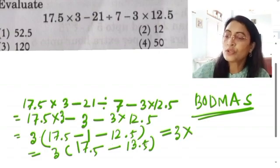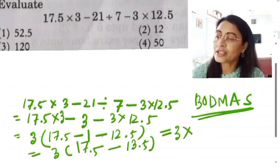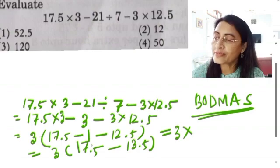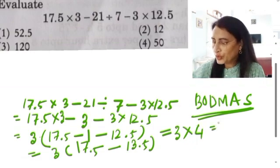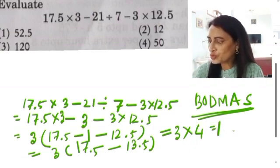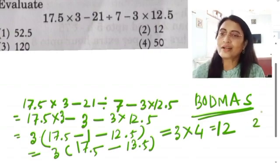17 also has 0.5, 13 also has 0.5, so ultimately nothing will come. Decimal left side number is 17, this is 13. 17 minus 13 is 4. That means this is going to be 3 into 4, which is 12. And 12, which option is it? Option 2. So this is the correct answer.